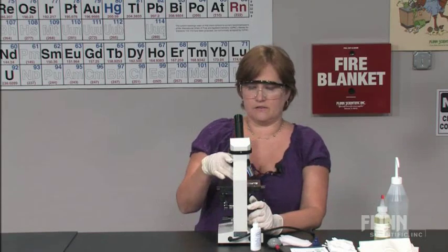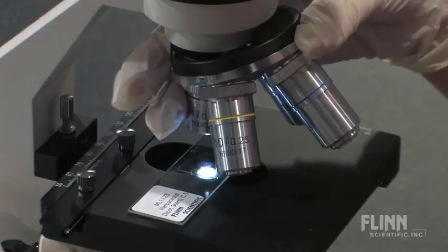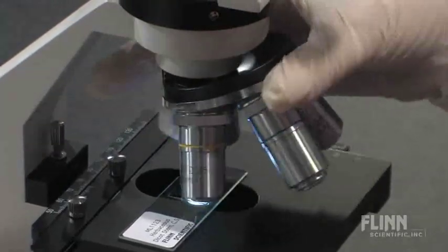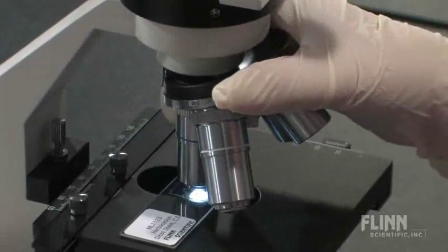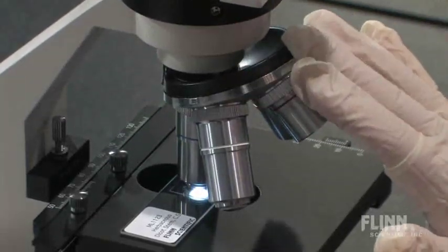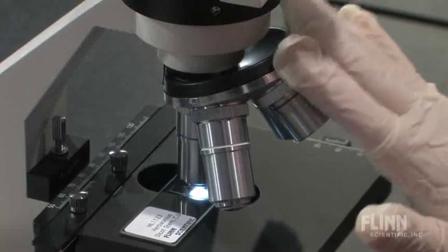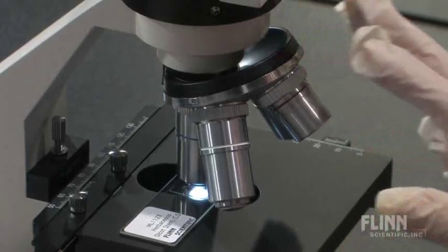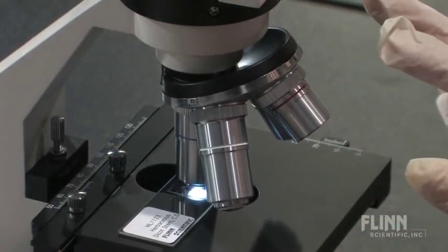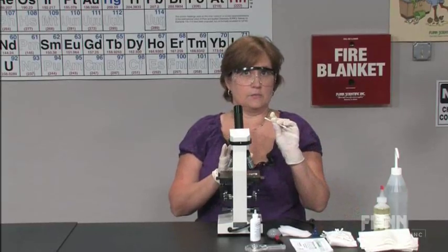If the dirt is on the objective, and that often happens, you're going to rotate the objective away from the sample. And in the case of low power, the objective is usually concave instead of convex, so you're going to want to use a simple cotton swab.